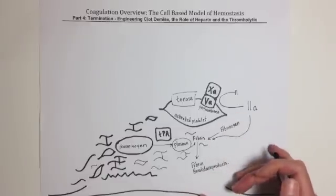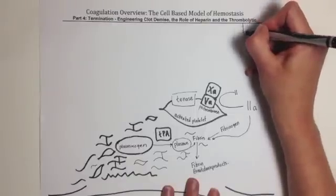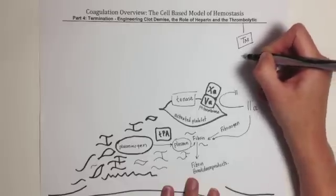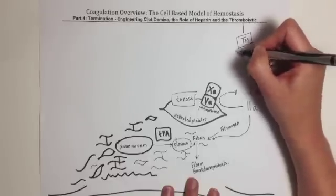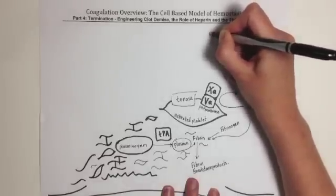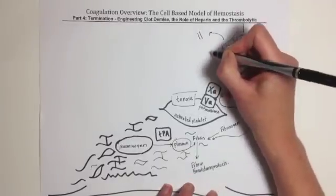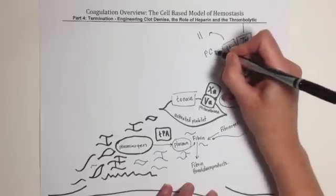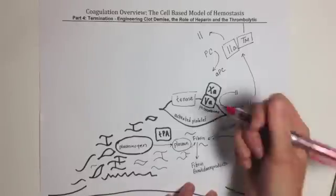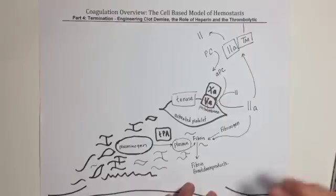Clot formation in addition to being able to break down remains localized because the surfaces of intact vascular endothelium express an enzyme called thrombomodulin. When thrombin comes in contact with thrombomodulin, it creates a complex which not only inactivates the thrombin but also activates the enzyme called protein C, creating what we call activated protein C, which is a potent inhibitor of factor V.